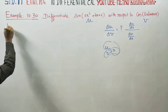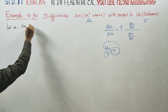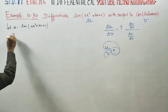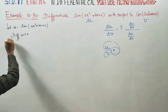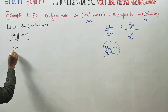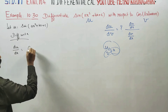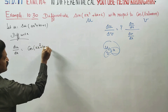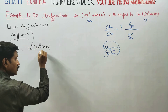Let U be equal to sin(ax² + bx + c). I am going to find du by dx. First, sin is differentiated using the chain rule — sin differentiates to cos of (ax² + bx + c).